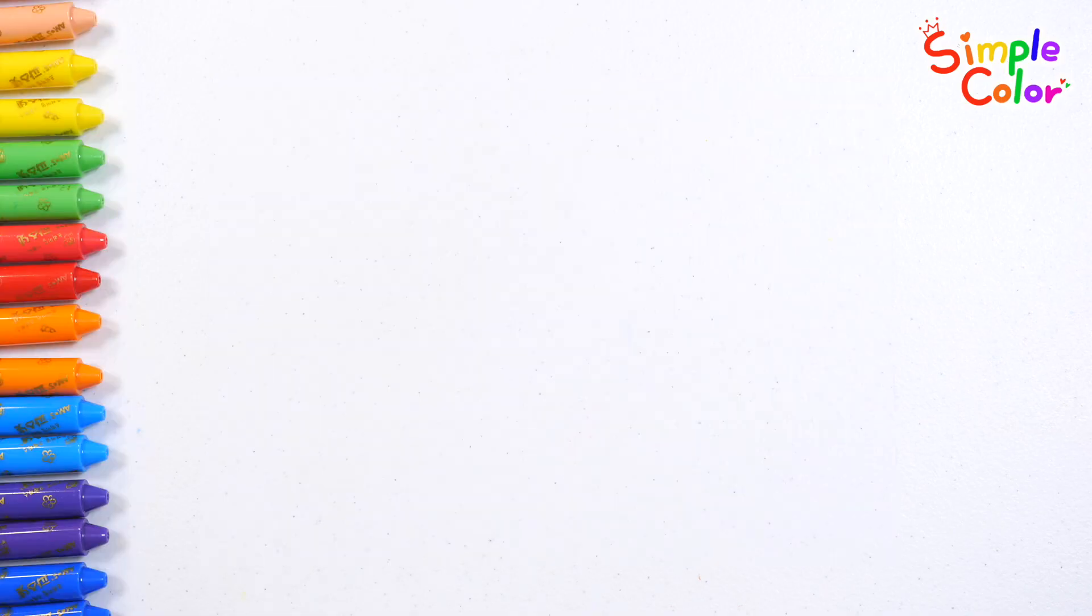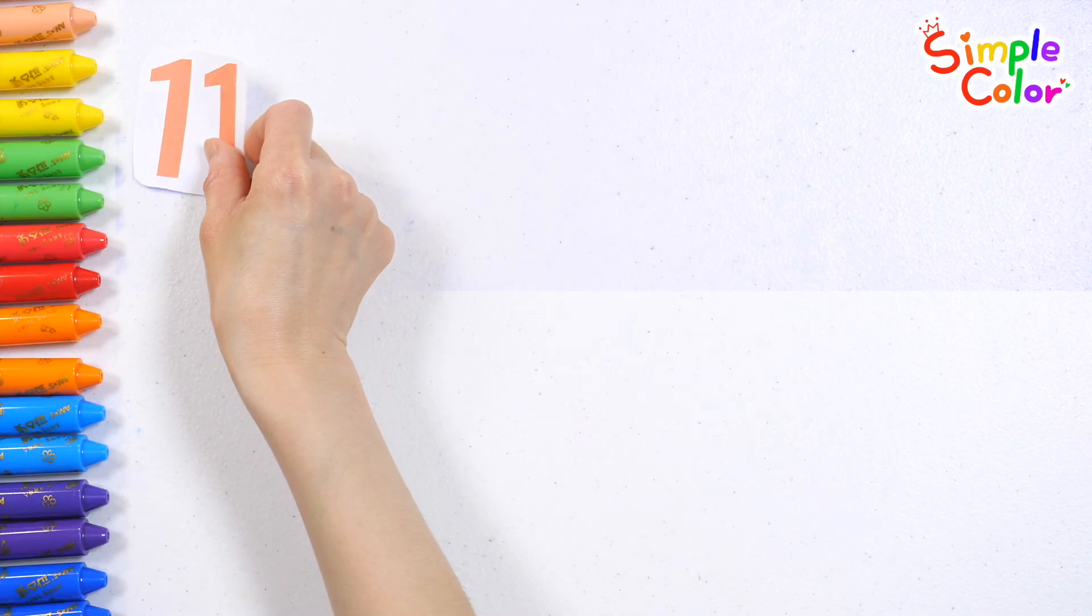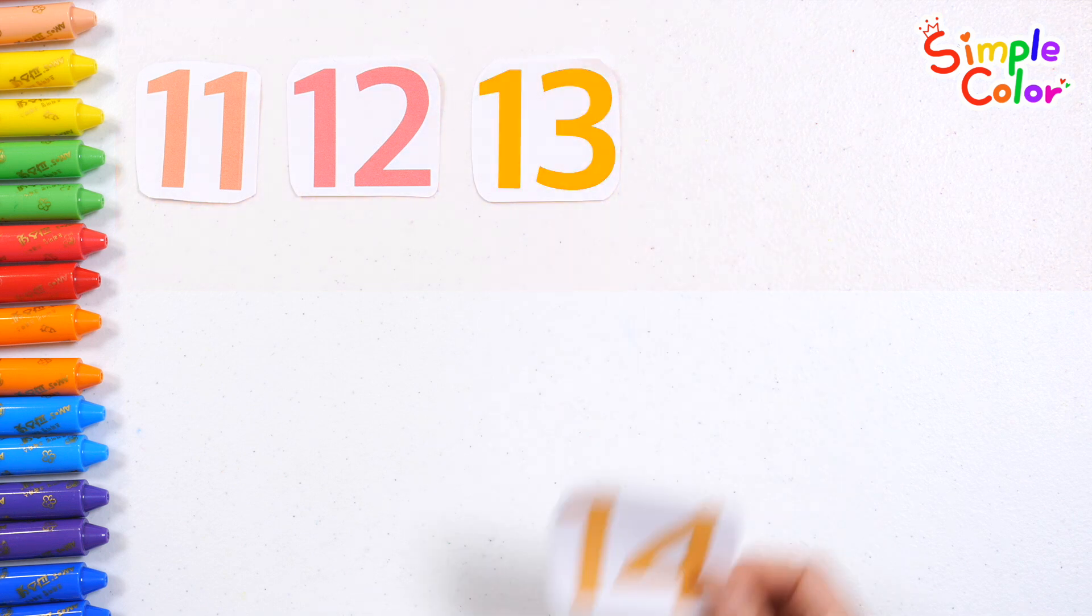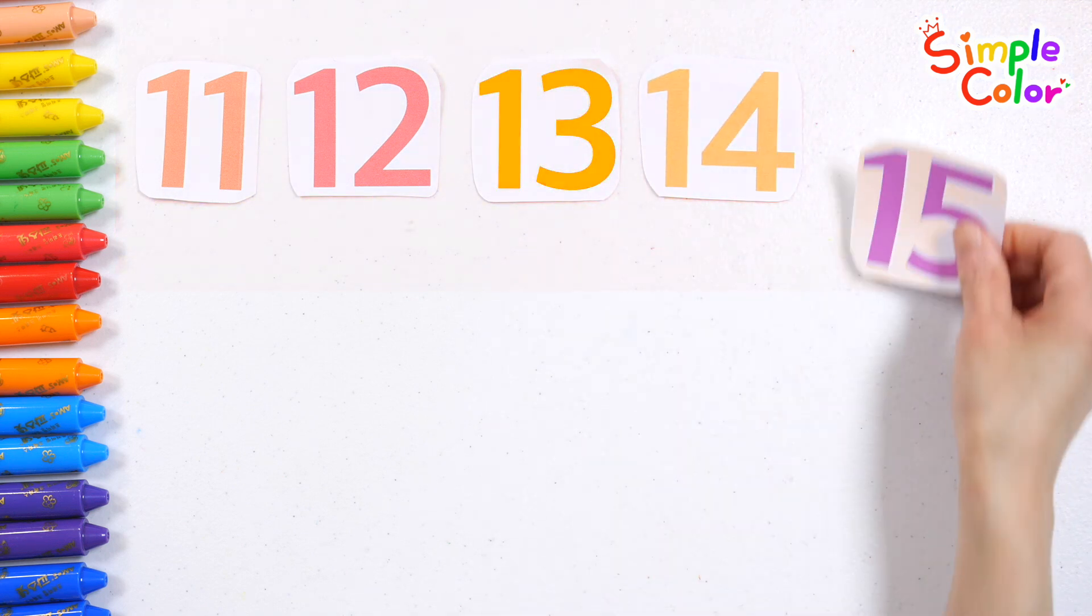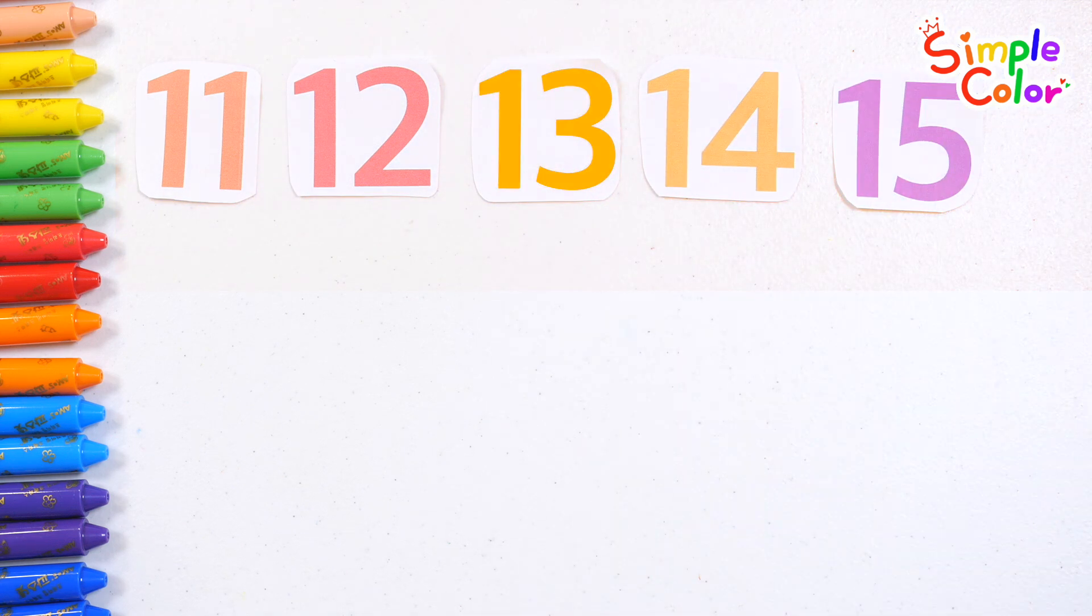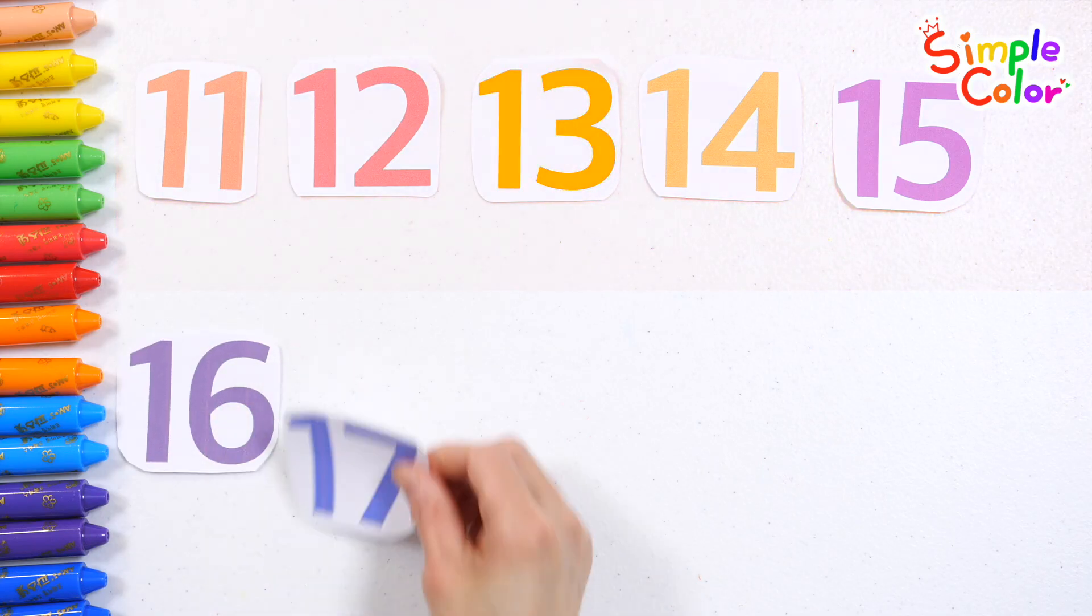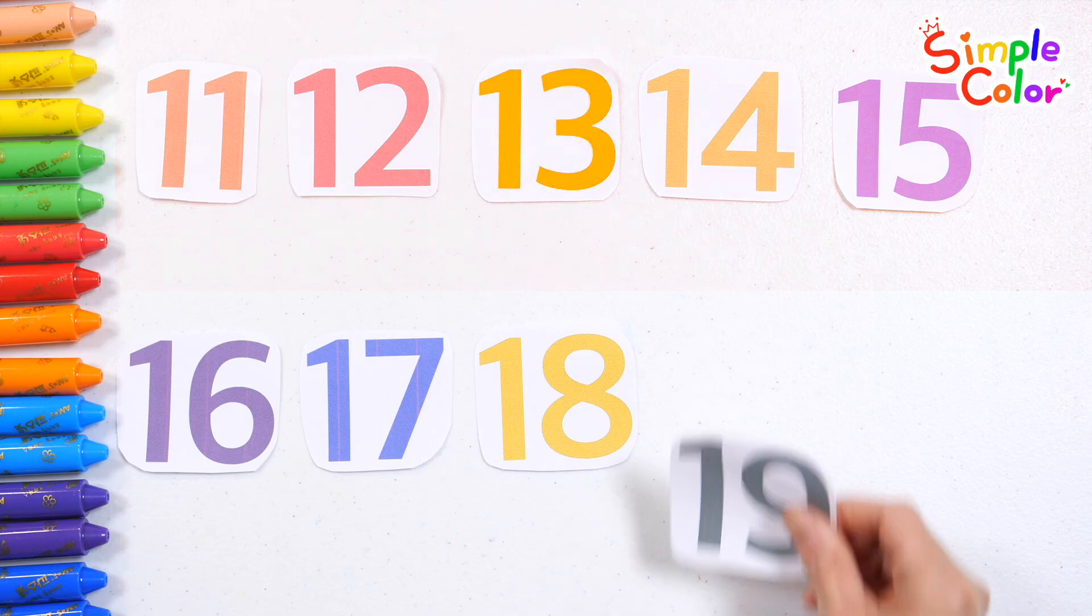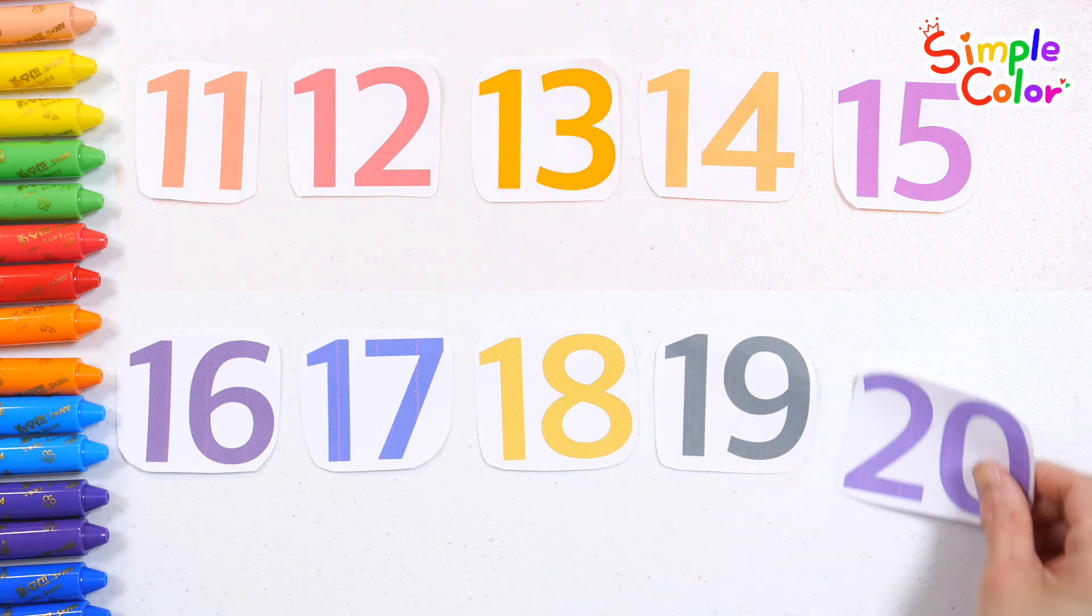Shall we read the numbers one by one? Eleven. Twelve. Thirteen. Fourteen. Fifteen. Sixteen. Seventeen. Eighteen. Nineteen. Twenty.